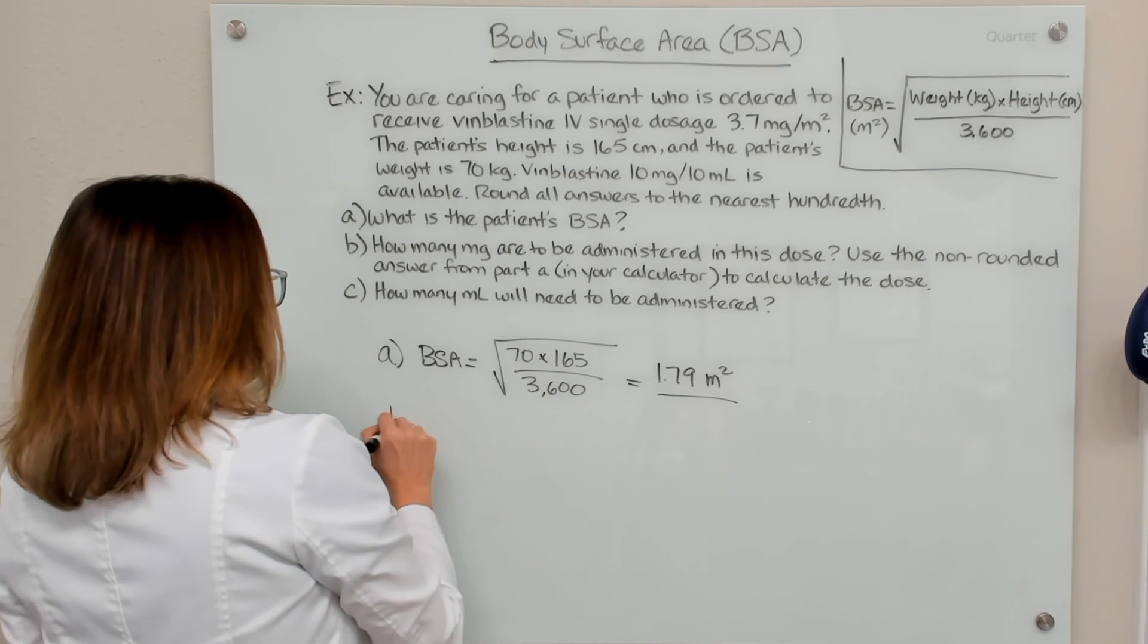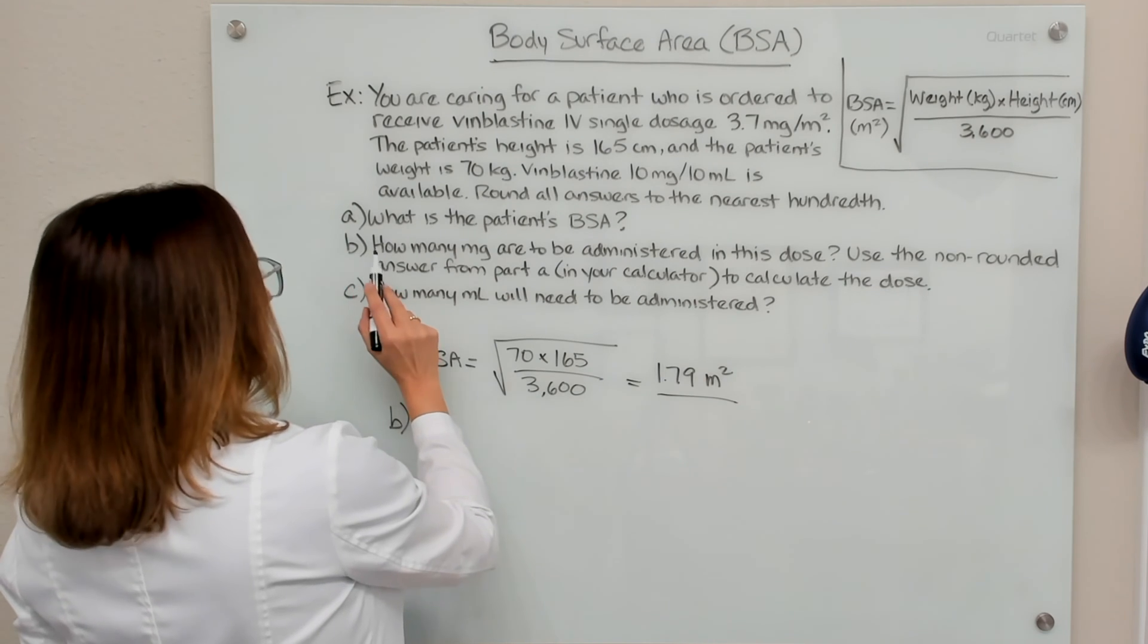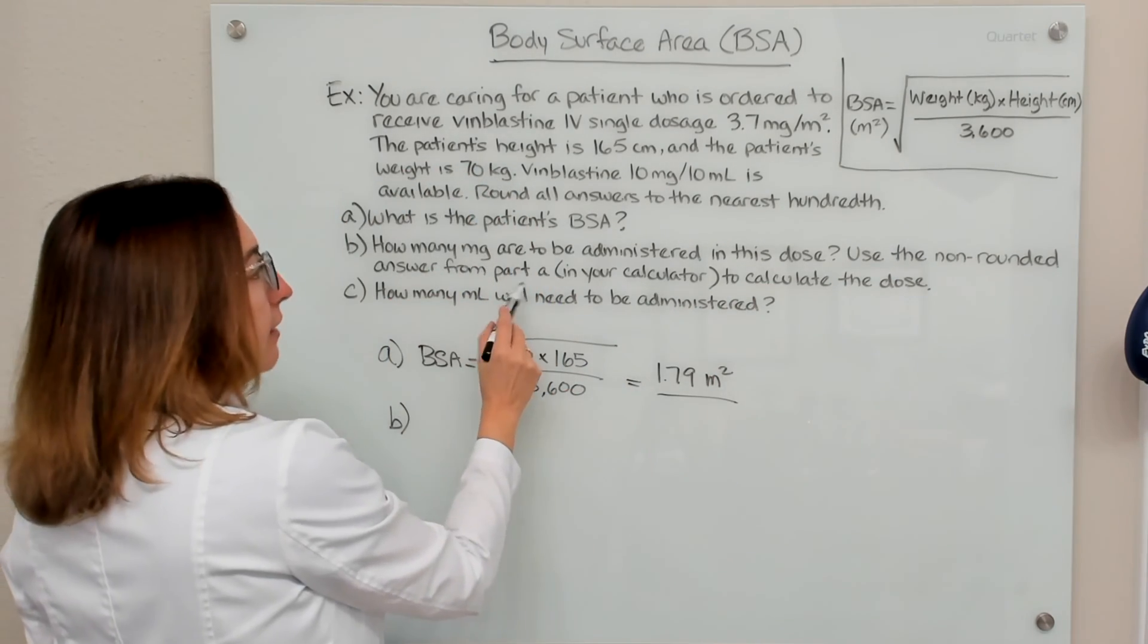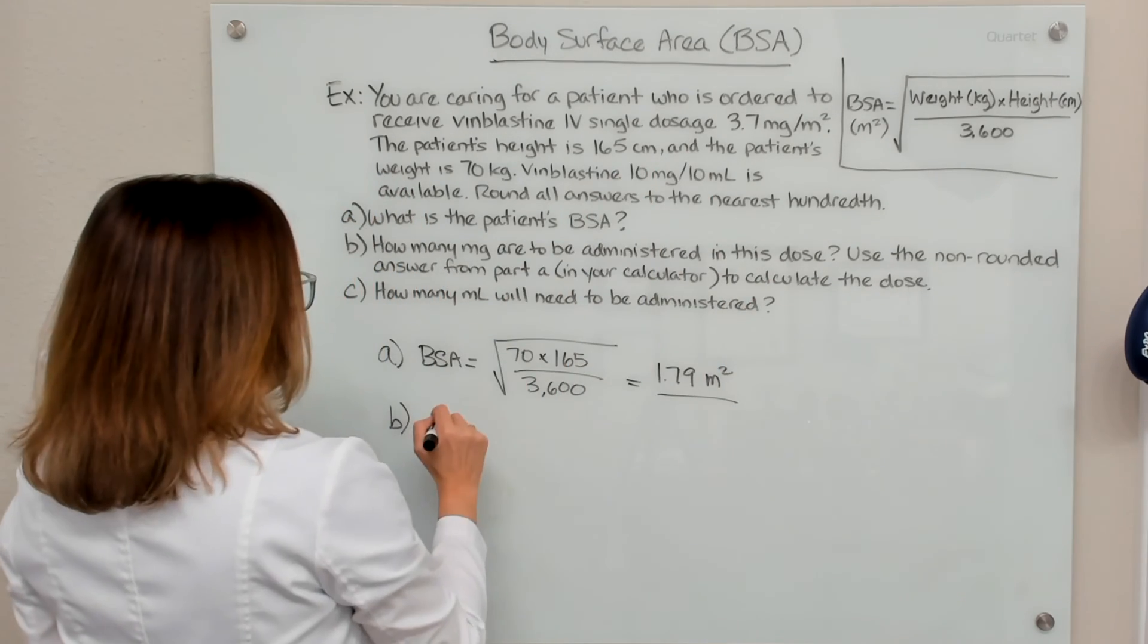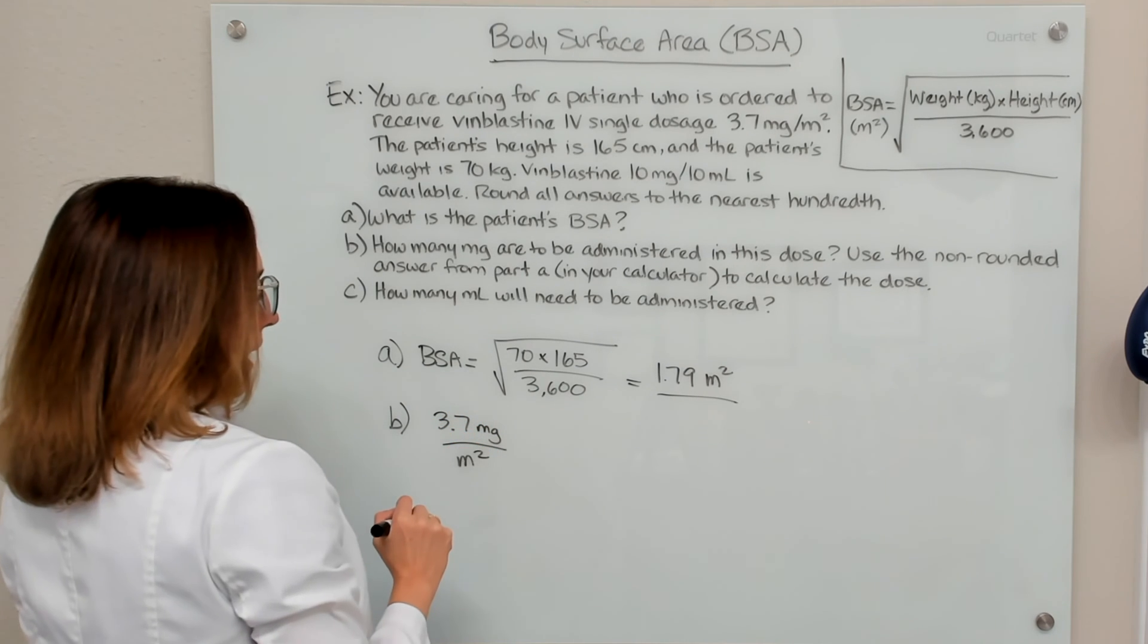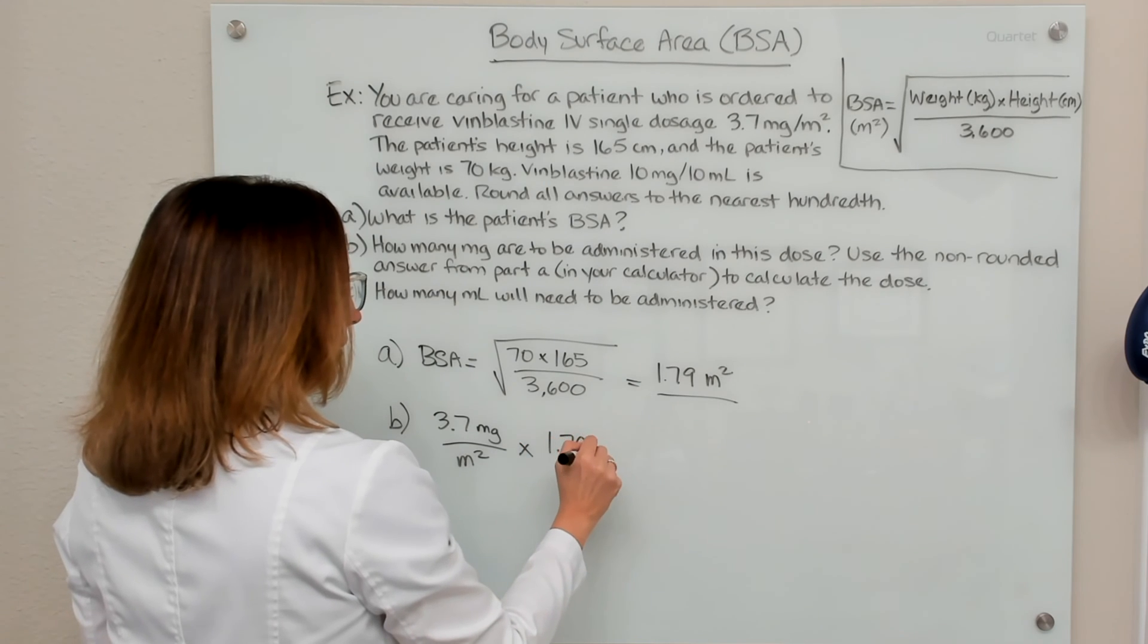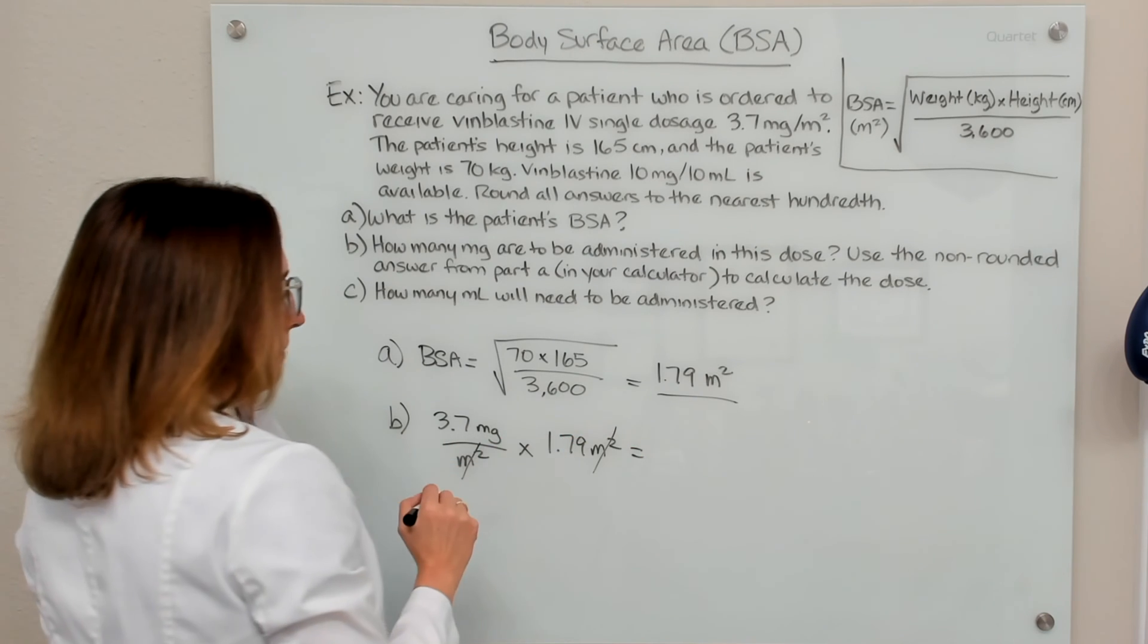Now let's move to part B. And again, keep that answer in your calculator. Part B asks us how many milligrams are to be administered in this dose. Use the non-rounded answer from part A in your calculator to calculate the dose. So the ordered dose is 3.7 milligrams per meter squared. And if we multiply this dose that's ordered by the patient's BSA, which is also in meters squared, then those will cross off and we'll be left with the milligrams.